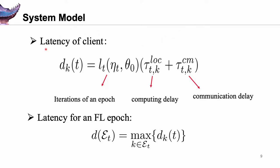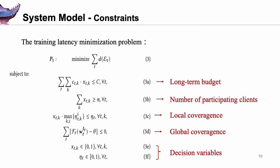We first introduce the iteration latency of each client, consisting of three parts: iterations of an epoch, model computation time, and model transmission time. The latency can be observed by the central server at the end of each epoch. Since federated learning is distributed, the latency of one epoch is determined by the straggler, that is, the slowest client. We aim to minimize the overall completion time while ensuring model convergence and satisfying budget constraints. Constraint 3a ensures long-term cost cannot exceed budget. Constraint 3b guarantees at least N participants in each epoch. Constraints 3c and 3d indicate convergence requirements of the local and global model, respectively.